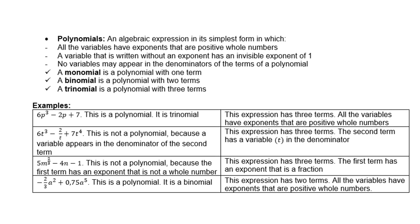Right, polynomials. An algebraic expression in its simplest form in which all the variables have exponents that are positive whole numbers. A variable that is written without an exponent has an invisible exponent of 1. No variables may appear in the denominators of the terms of the polynomial. A monomial is a polynomial with one term, a binomial is a polynomial with two terms, a trinomial is a polynomial with three terms.